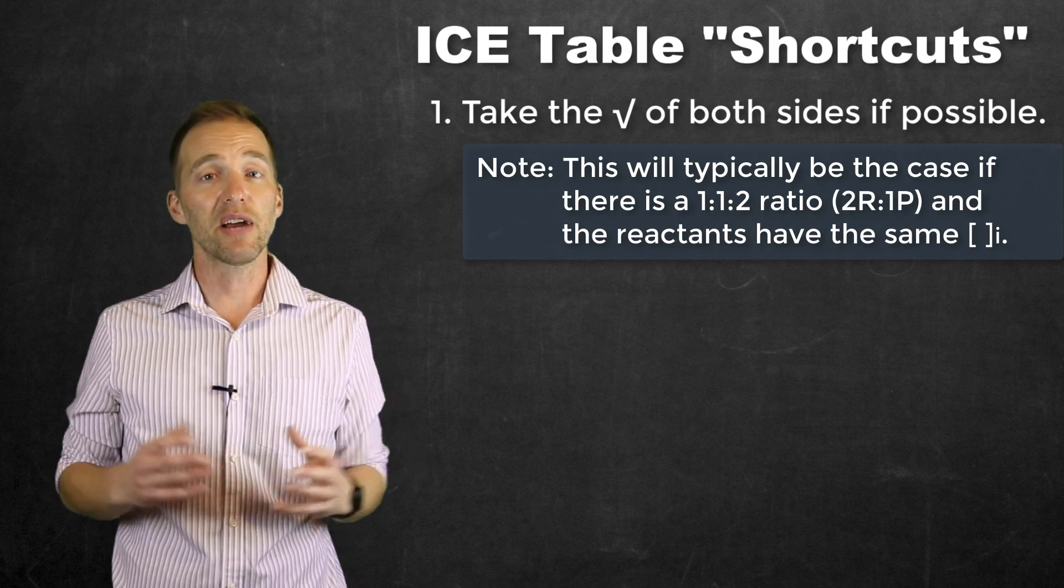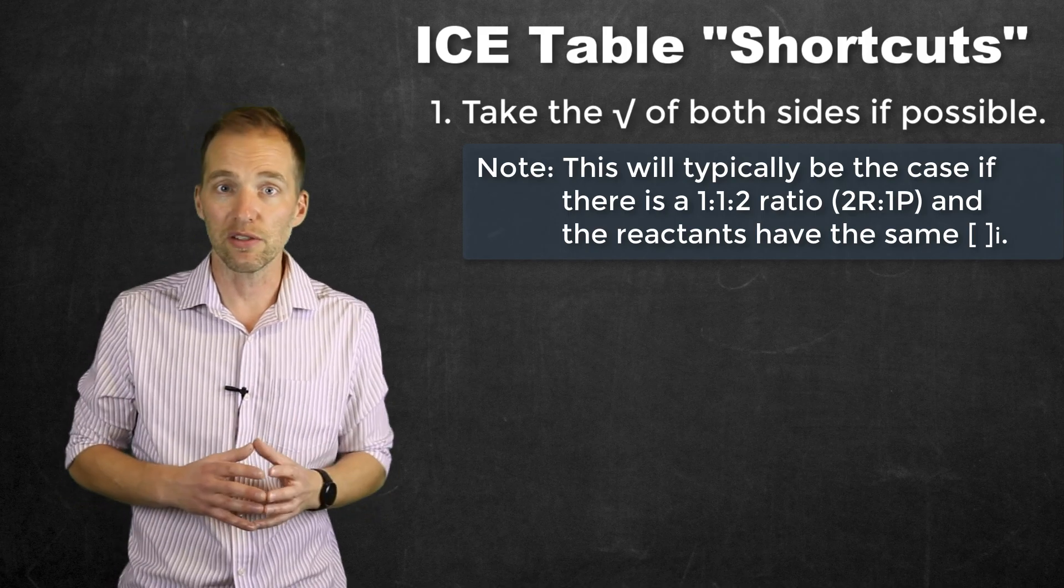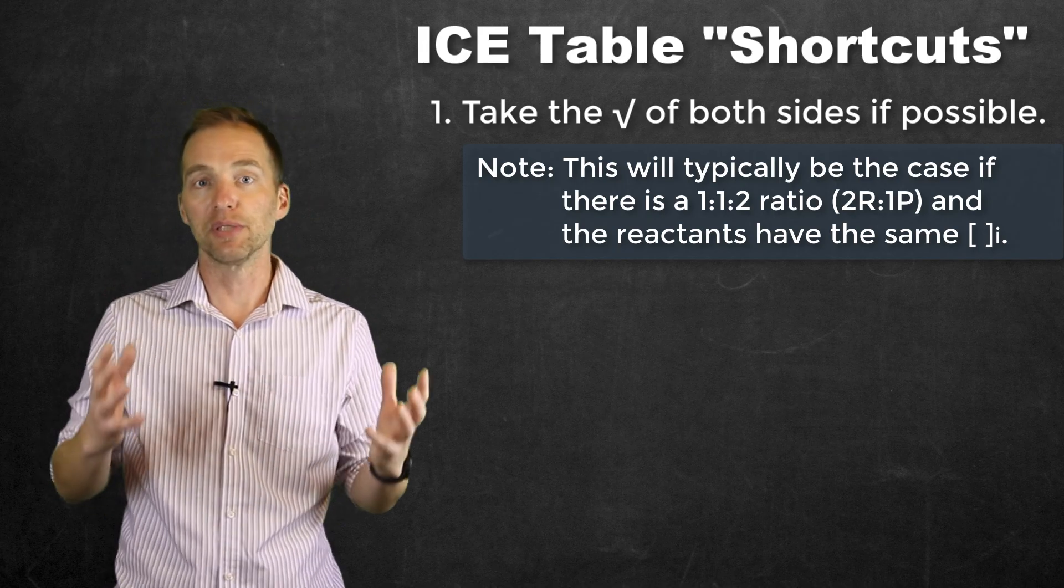because if that were the case, you'd have a negative X value, and if you plugged it back into the equation, you would find that you would have a negative concentration, which is not possible. We can't have less than nothing of a substance.